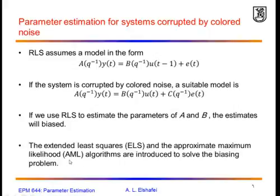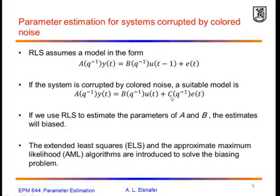To avoid this bias there are two basic techniques in the literature — slight modifications to the least squares algorithm. Essentially, what we are going to do is calculate the parameters or coefficients of polynomial C. The problem is that we cannot measure the noise sequence E directly, so we have to estimate it simultaneously as we calculate the parameters.